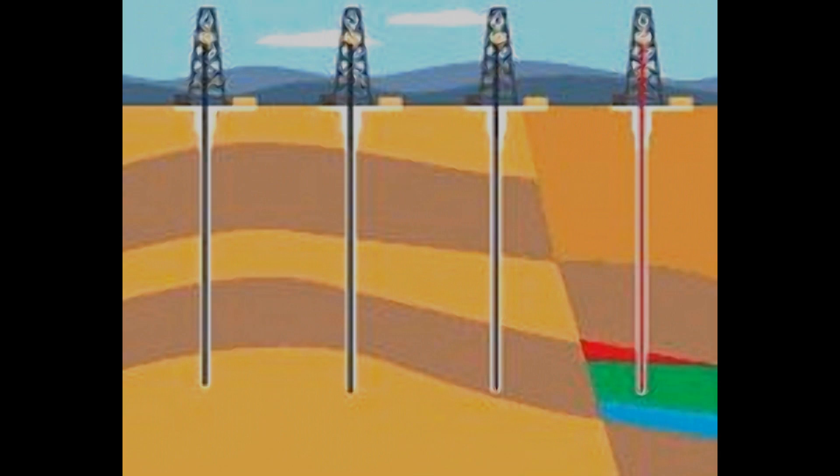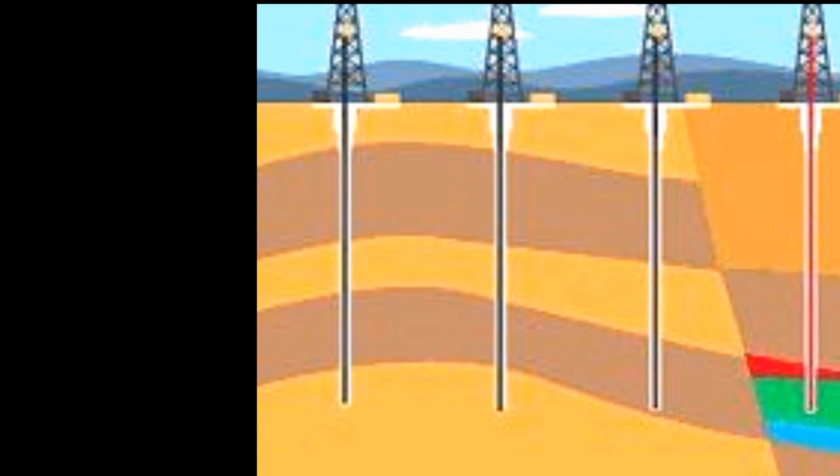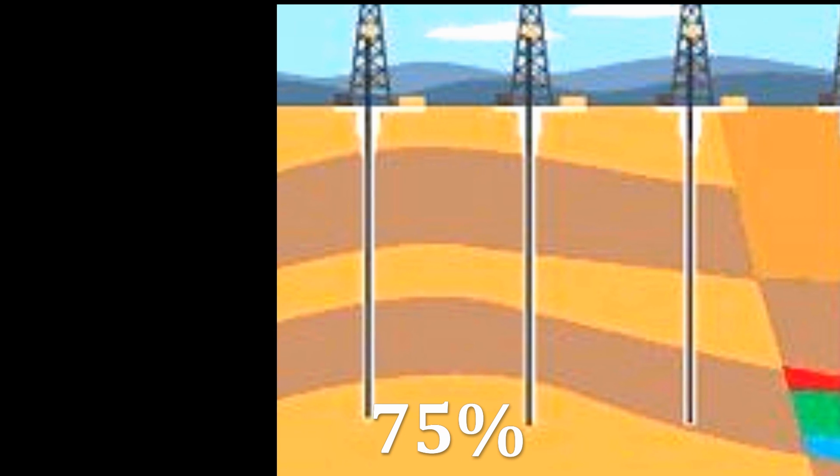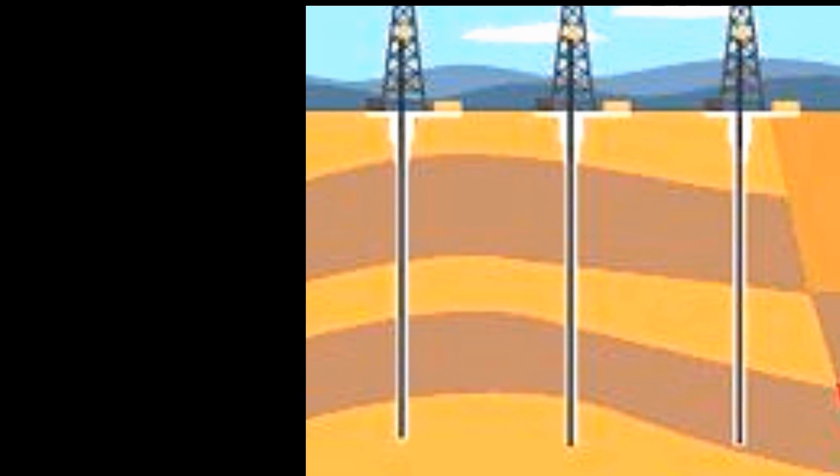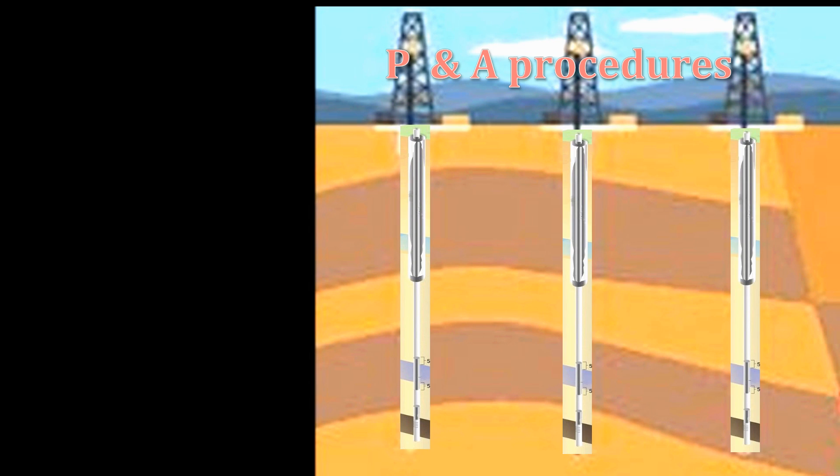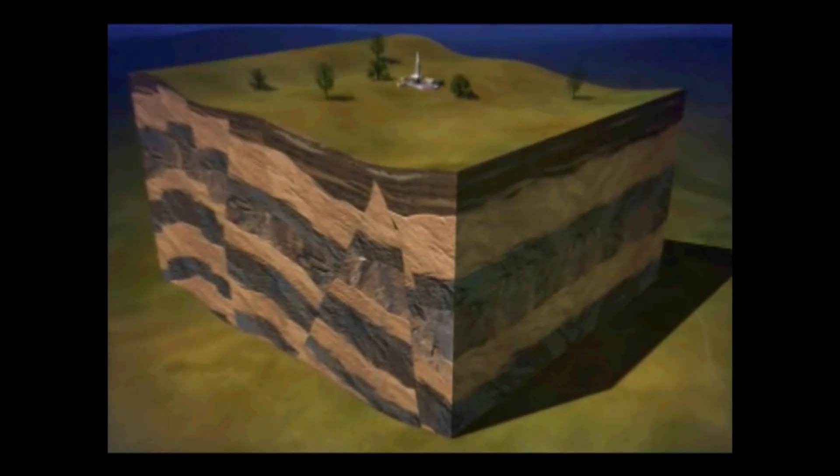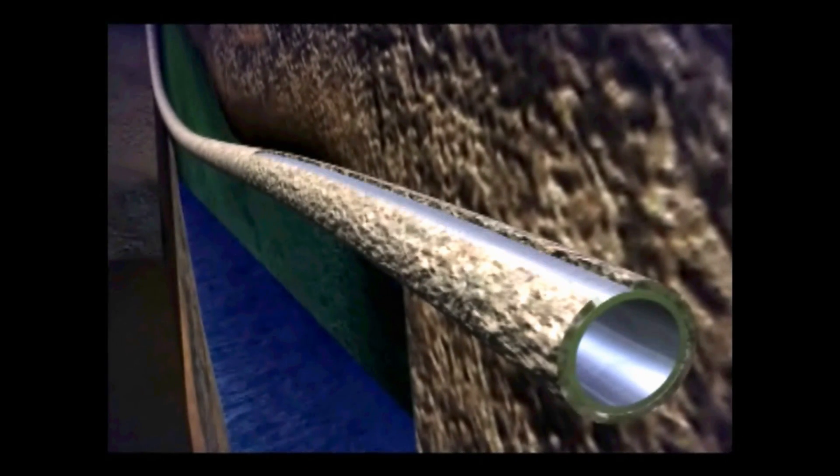In previous lectures, we have mentioned that wildcat wells, wells in areas where no one has drilled before, are more likely to be dry holes. Industry figures suggest that as many as 75% of all drilled wildcat wells are dry. P&A procedures, therefore, can become quite routine in wildcat areas. That said, the rest of this lecture will pertain to the procedures and their functions used in well completion.